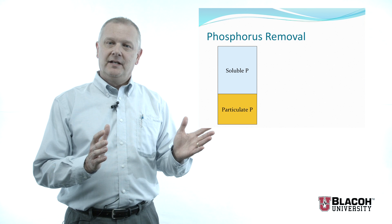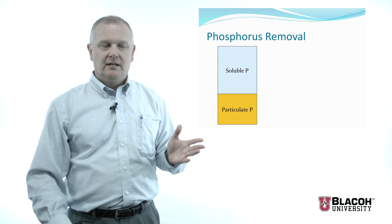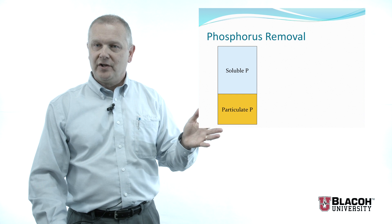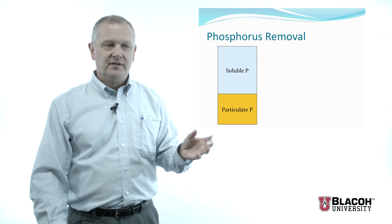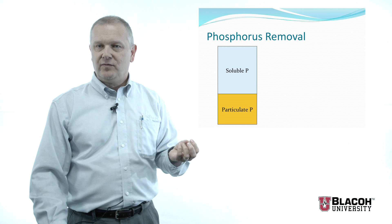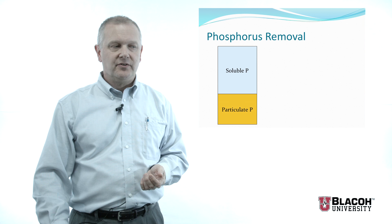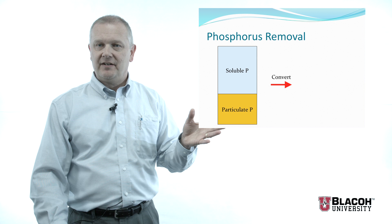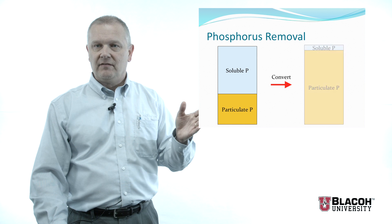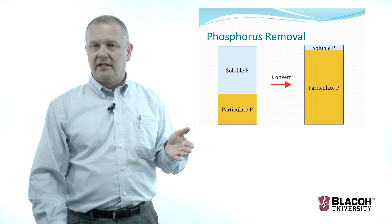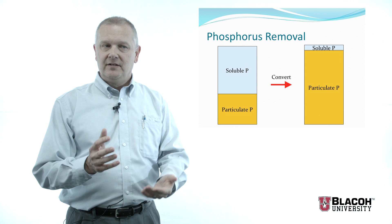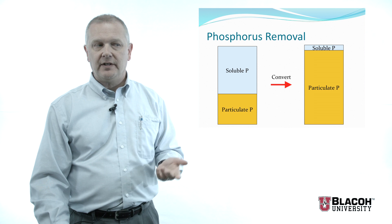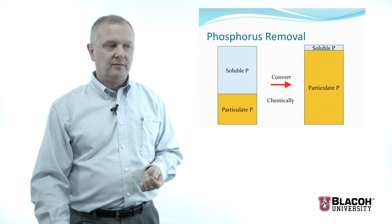Phosphorus removal can be summed up in this diagram. Phosphorus that comes into the treatment plant is about two-thirds soluble or dissolved and about a third in particulate form contained in organic molecules. The whole idea of phosphorus removal is to convert this scenario to one where almost all the phosphorus is particulate, so that it can be settled or filtered out of the water. We can do this two ways: chemically and biologically.